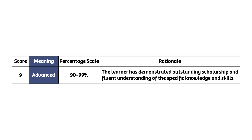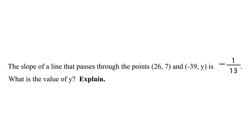Now let's move on to an advanced 90-level question. The category represents a 9, which is the equivalent of a 90 in the gradebook, and our rationale is that the learner has demonstrated outstanding scholarship and fluent understanding of the specific knowledge and skills. We now want to know if they can take the skill a step further and apply their learning. Here's an example from the same slope quiz — notice how it's not straightforward anymore. It's noticeably more difficult because a fraction is involved and it's a negative number as well. The structure is different; students need to do some serious thinking. If a student does well on two problems at this level, a teacher can be confident they've entered the advanced level of their learning.